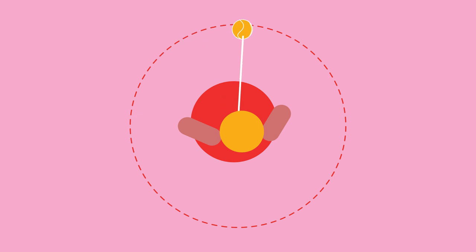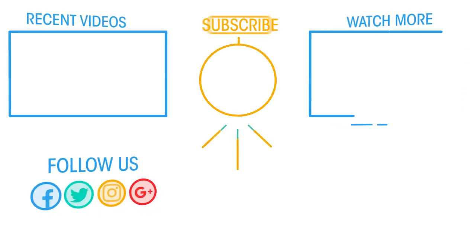So that's how velocity can change whilst speed remains the same: by changing direction and not speed.